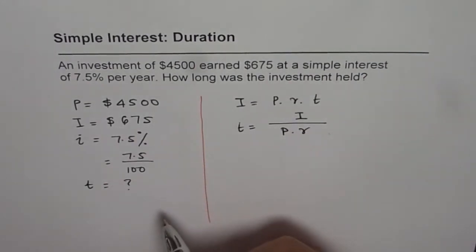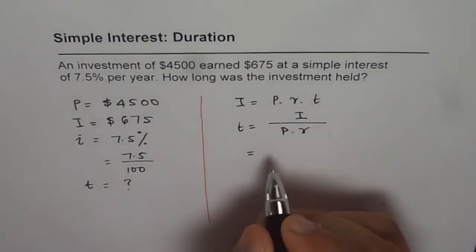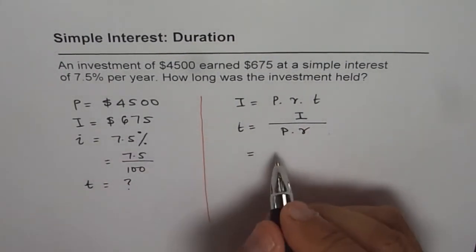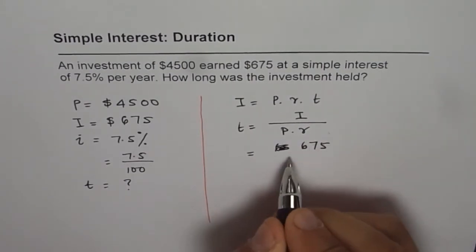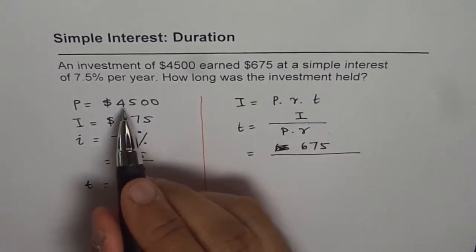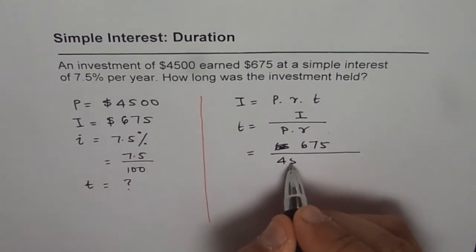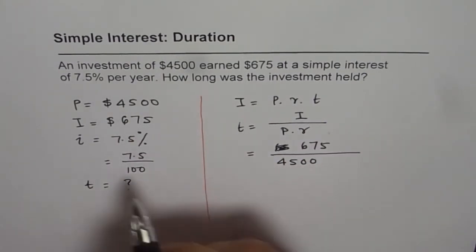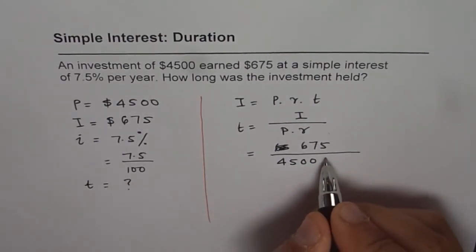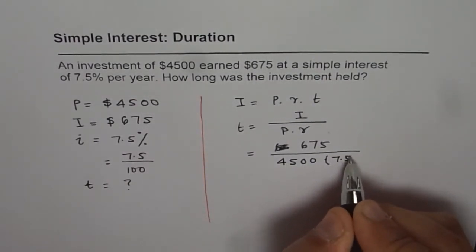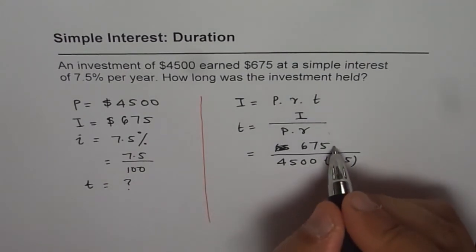We know all these values. We can substitute these values and find the answer. So, we get time is equal to interest which is 675. Let me make it 675 divided by principal amount of $4,500 and interest of 7.5. So, it is times 7.5 over 100. We can take it here.